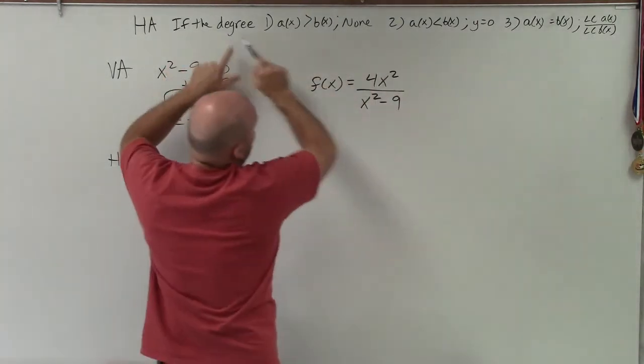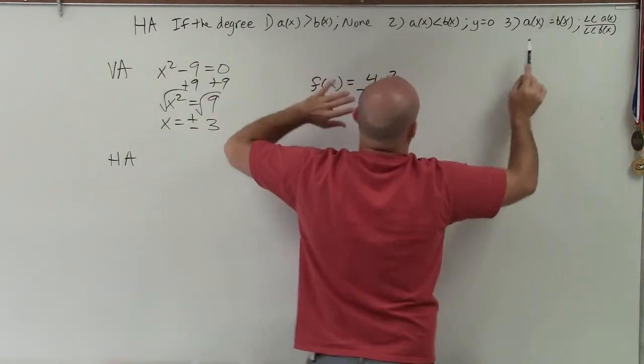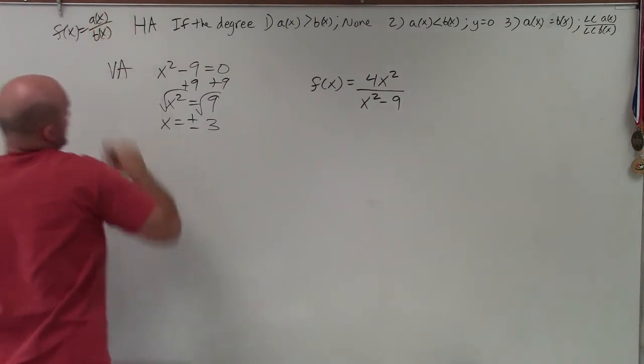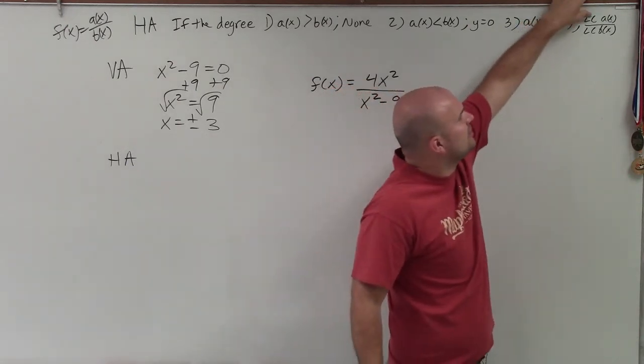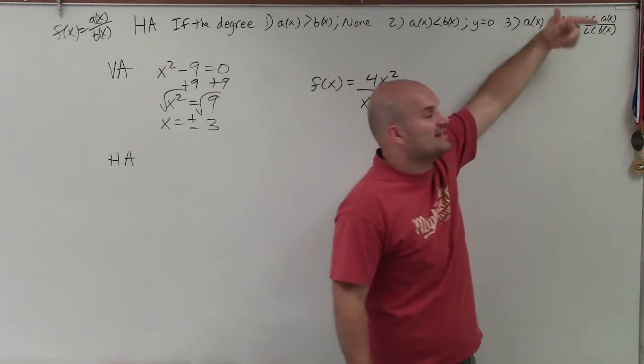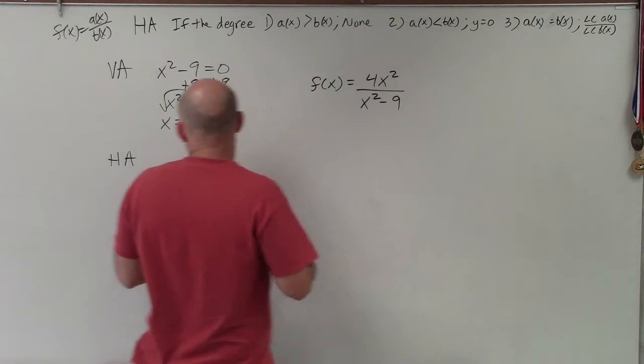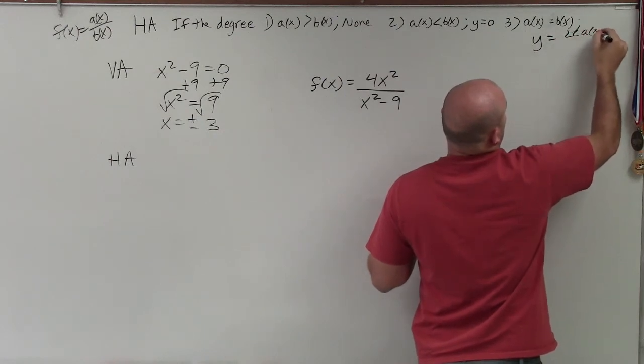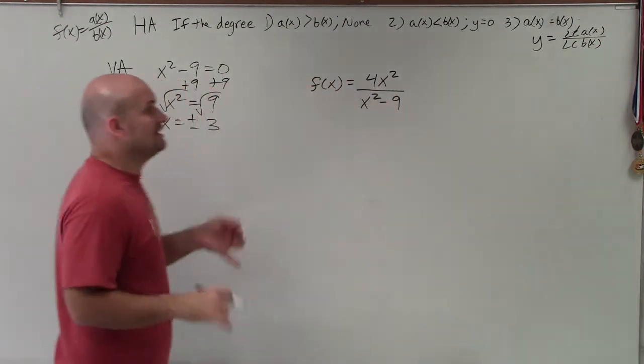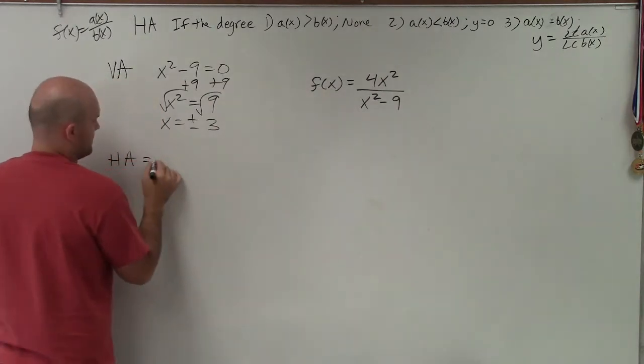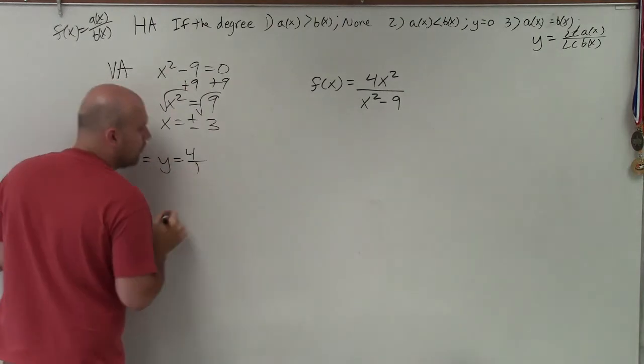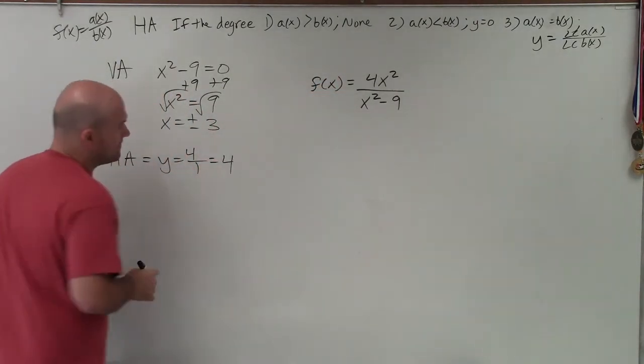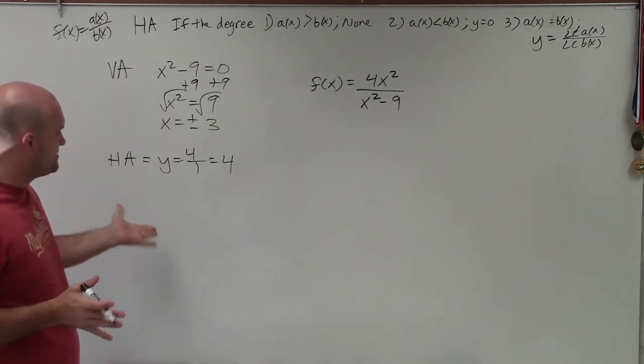Now, therefore, if the degrees are equal for the numerator and the denominator, the degrees are exactly the same. Therefore, we need to look at the LC, which is the leading coefficient of the polynomial for a of x, divided by the leading coefficient of my polynomial for b of x. So to find the horizontal asymptote, that should be y equals. So therefore, y equals the leading coefficient of a of x. So the leading coefficient here is 4 over the leading coefficient for this polynomial, which is just 1. Remember, the leading coefficient is the coefficient of your term with the highest degree. So I have 4 and 1. Well, obviously, that just equals 4. So now what I have is I have two vertical asymptotes and a horizontal asymptote.